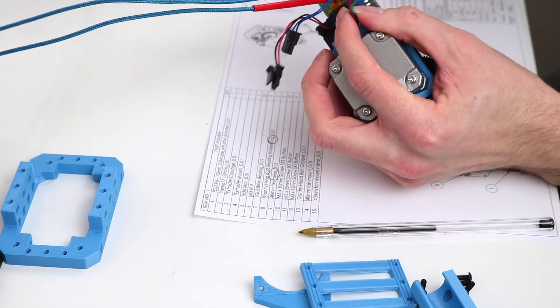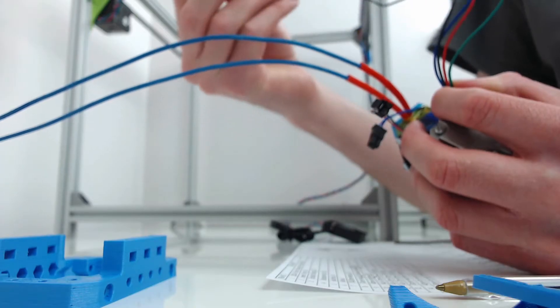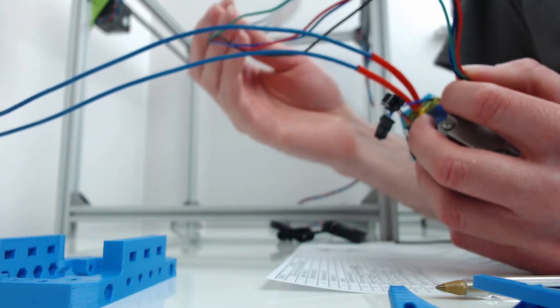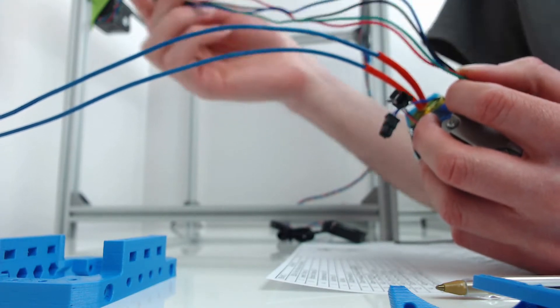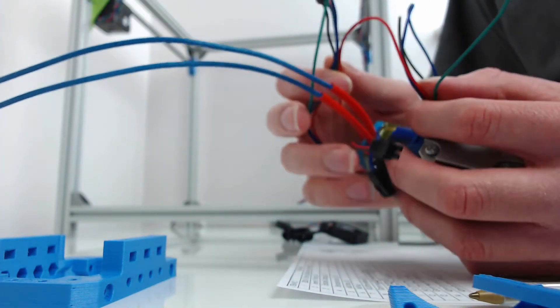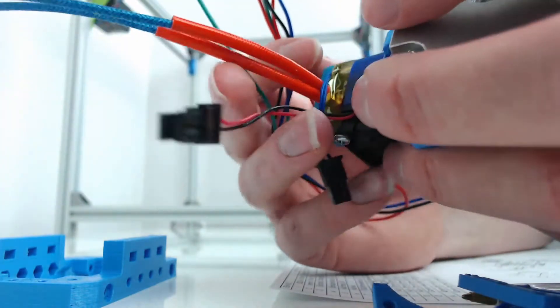You might want to extend this cable, mine's particularly short. The extruder motor is going to have to be basically the longest to make sure we have plenty of movement around the print area.